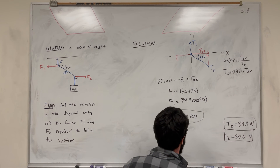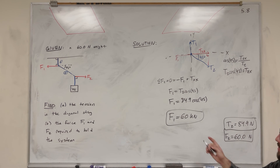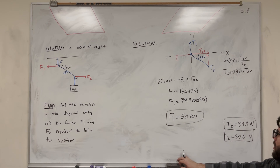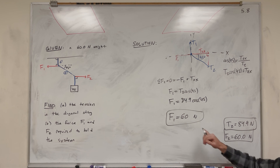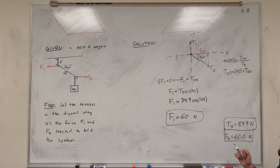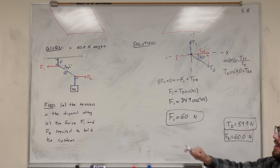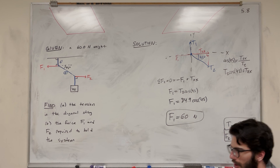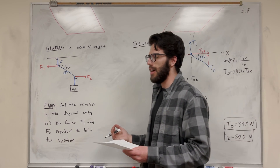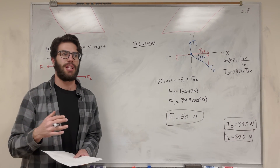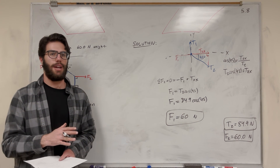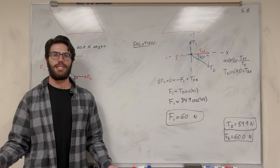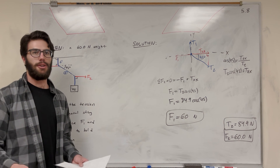And there we go — we've finished the problem and solved all of it. If you hold F1 and F2 at 60 Newtons, it will hold that weight up in this position. That's how you solve this kind of problem. If you have any physics problems, feel free to check out my playlist — I've got a whole lot of problems just like this from the book. Feel free to ask any questions in the comments and I'll try to get to them. See you in the next video!